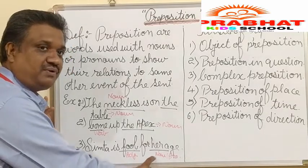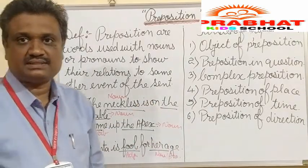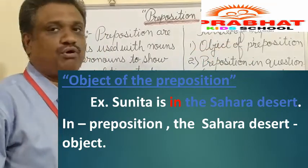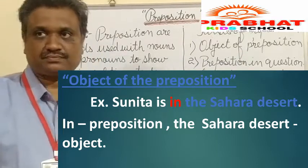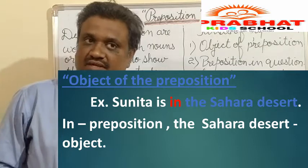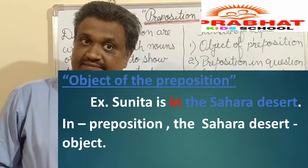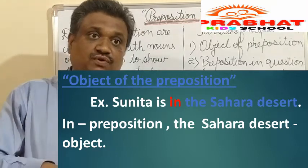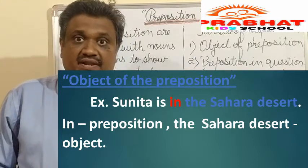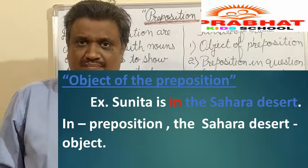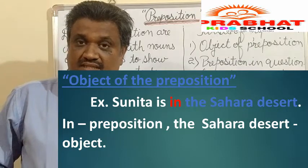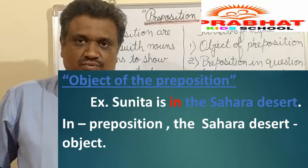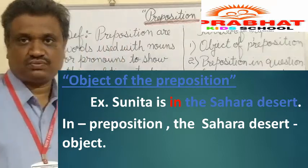Now let's proceed to the first kind of preposition: the object of the preposition. In verbs, we have learned two types — transitive and intransitive. Transitive means the action passes from the verb to an object. Intransitive means the action stops at the verb. This concept of finding the object plays a very vital role in prepositions.